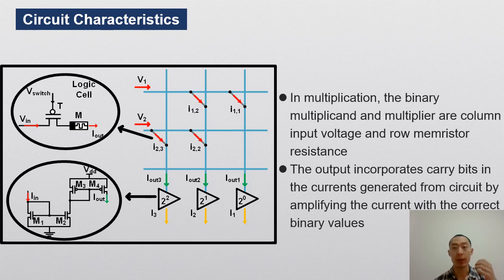It is built with 1T1R cell crossbar and the current mirror amplifier. The multiplicand and the multiplier are in digital type. The partial products are generated in analog type. After the accumulation, the final product will be in digital type again.